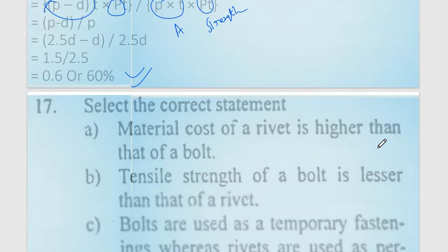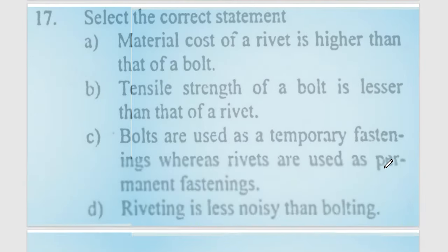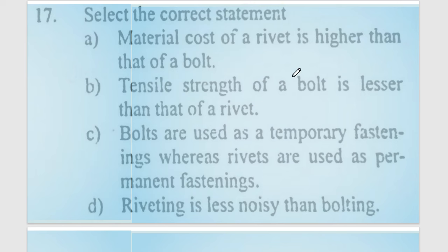Question number 17: select the correct statement. The material cost of a rivet is higher than a bolt — this is incorrect. The tensile strength of a bolt is greater than that of a rivet. Bolts are used for temporary fastening (they can be removed), whereas rivets are used for permanent fastening. Option number C is correct.